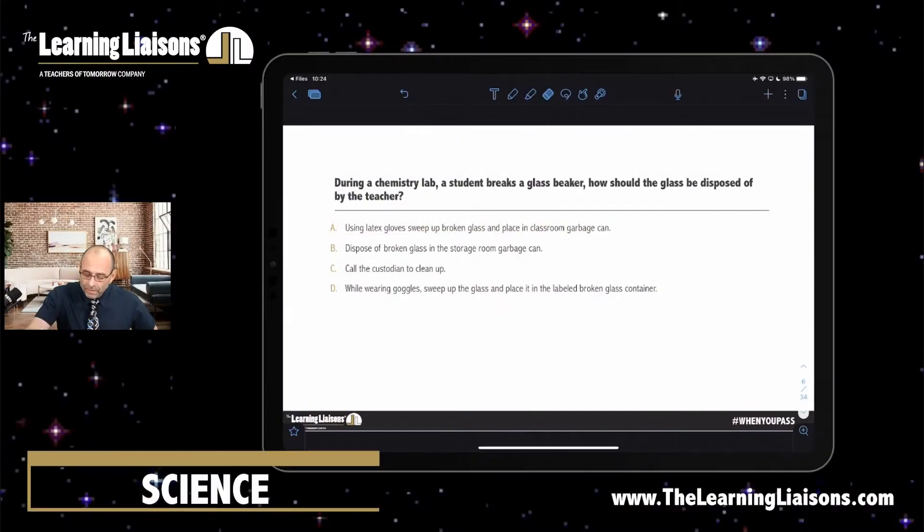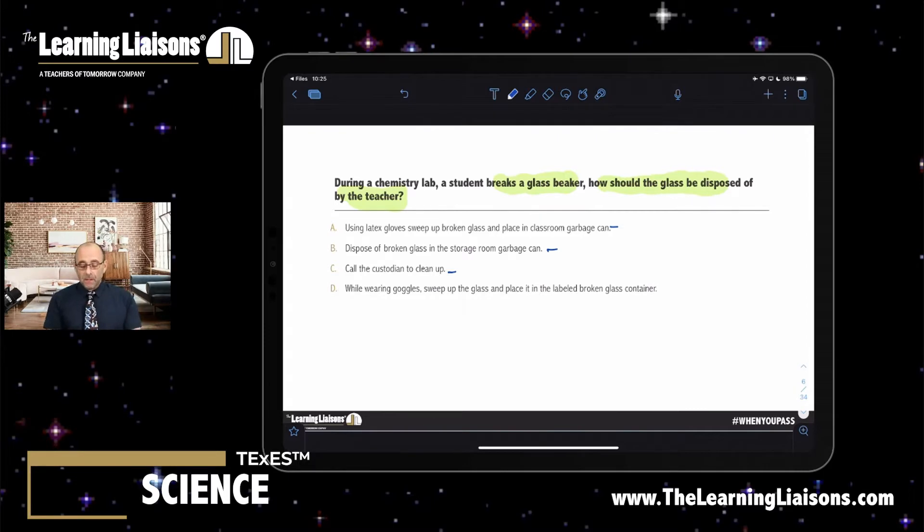So in this question, we've got a student breaks a glass beaker. How should it be disposed of, especially by the teacher? So they want me to say what I'm going to do to dispose of the glass. Any random garbage can is a horrible idea because if I pick up the garbage can, if the student does, the custodian does, bad times. I can't call a custodian because I have to dispose of it. The question says I have to do it. So now I've got using latex gloves to sweep it up and then, oh, we're back to the garbage can. No good there. The best answer while wearing those goggles, sweep up the glass and place it in the labeled broken glass container.